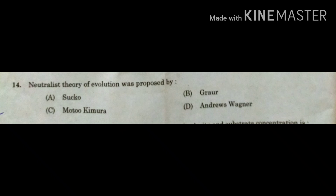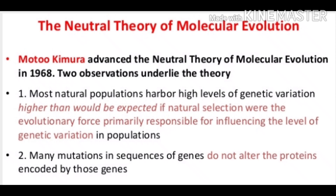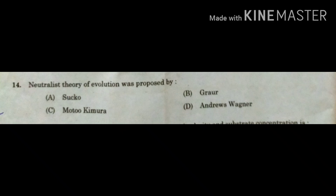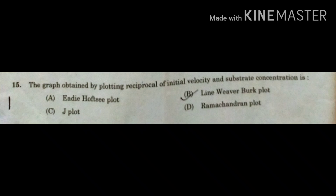The next question: the neutralist theory of evolution was proposed by whom? The neutral theory of molecular evolution was developed and advanced by the scientist Motoo Kimura. According to this theory, most natural populations harbor high levels of genetic variation — much more than expected due to natural selection — and many mutations in gene sequences do not alter the proteins encoded by those genes, such as synonymous or silent mutations. The answer is option C: Motoo Kimura.